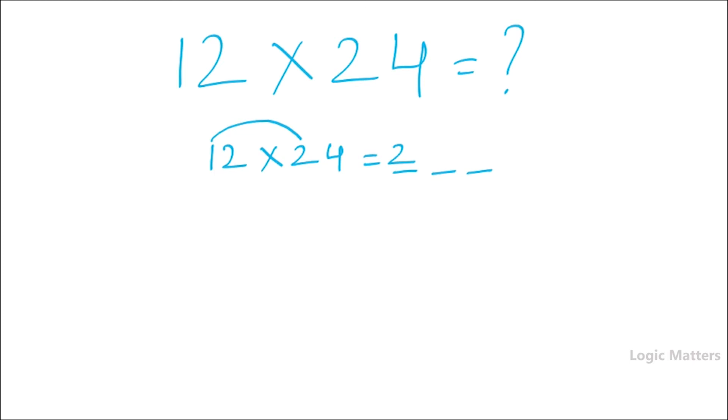Now multiply second position with the second number, second position. That is 2 multiplied by 4 is 8. Now write 8 in the third position. Now we need to find this middle one.